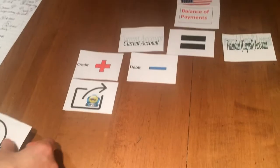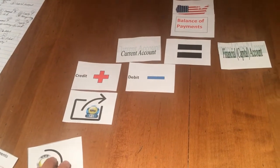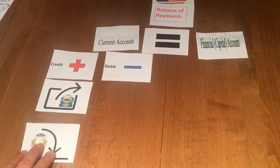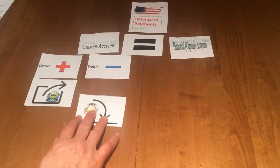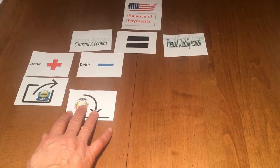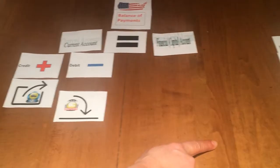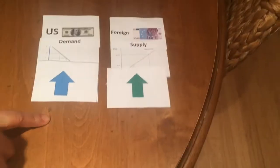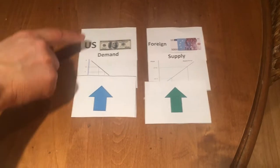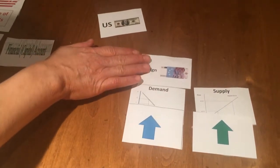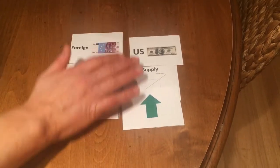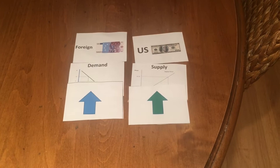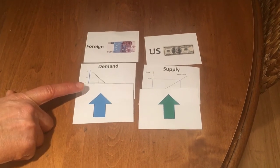Now we can talk about imports. Imports are goods or services that we're importing into this country, and therefore this would be a debit to the current account because we are buying other countries' goods. When we think about that, the demand for currency is going to be in foreign currency because we need that to buy the imported goods — we will supply US dollars in order to obtain the foreign currency.